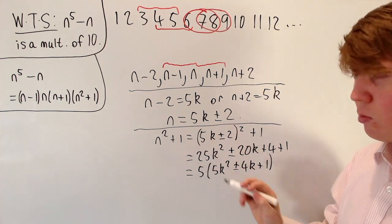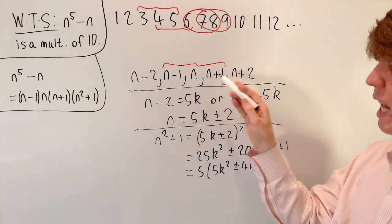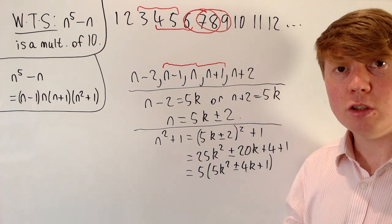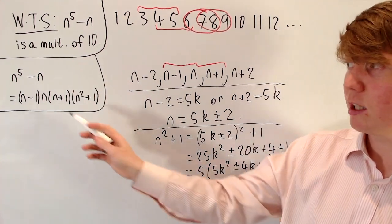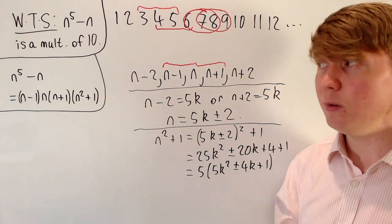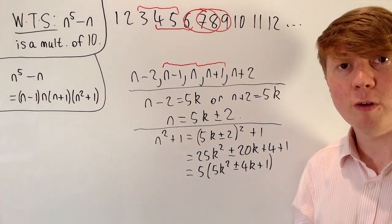And you see that n squared plus 1 then is a multiple of 5 in this case, where none of n minus 1, n, or n plus 1 is a multiple of 5. So we've actually shown then that n to the 5 minus n must be a multiple of 5. We either have, it's nice and easy if any of these three are a multiple of 5, but if not, then this guarantees that n squared plus 1 is also a multiple of 5.